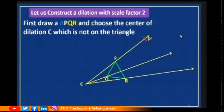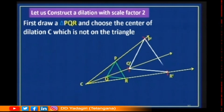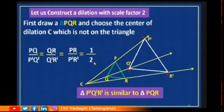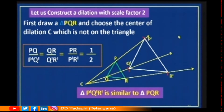If the scale factor is three, you take three times the distance. Next I cut the second ray at point Q' and the third ray at point R'. So CP' is double CP, CQ' is double CQ, and CR' is double CR. Now joining P'Q', Q'R', and P'R' gives triangle P'Q'R', which is similar to triangle PQR. The corresponding sides are in proportion with ratio 1:2, so PQ/P'Q' = QR/Q'R' = PR/P'R' = 1/2.